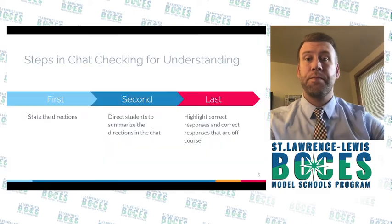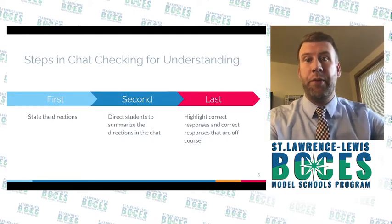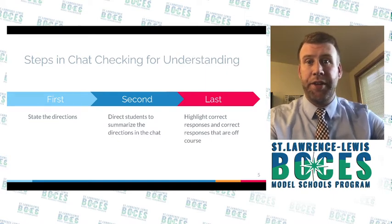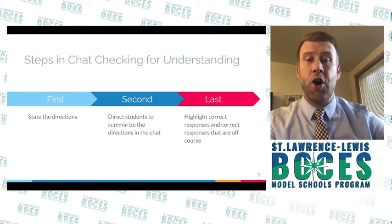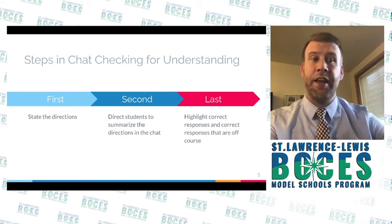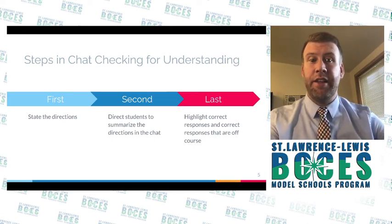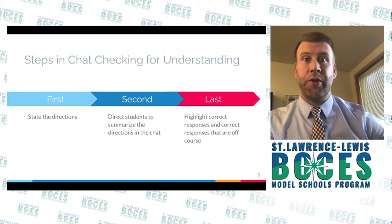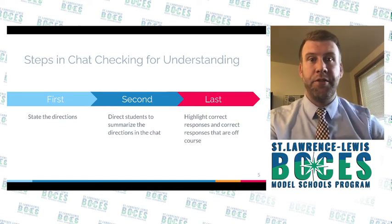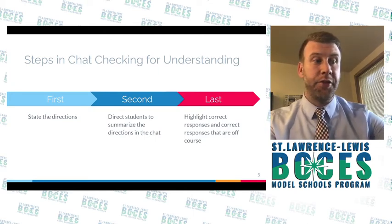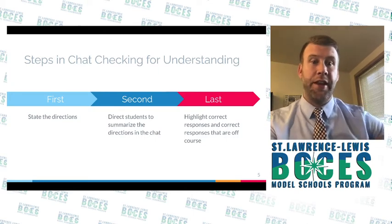Here's a three-step way to check for understanding via chat. First, you state the directions — what you want kids to do. Next, tell all students that you want them to summarize, restate, or retell the directions in the chat. Finally, you view what's going on in the chat — or use a moderator — and highlight the answers that are correct.